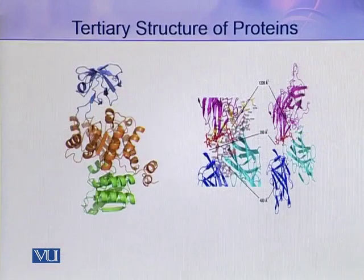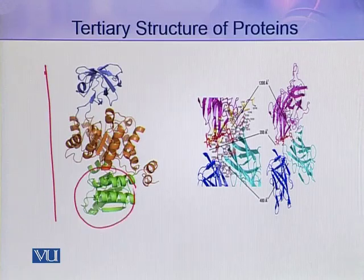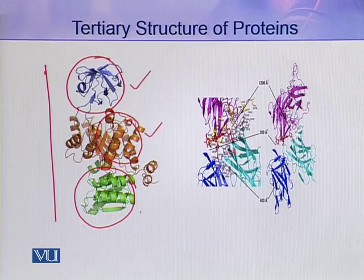As shown in this picture, this protein is at its tertiary level of organization. You can clearly see one domain here, another domain here, and the third domain here. So this whole molecule contains three domains, and it appears that this protein is trilobular — three lobes are present in this molecule.